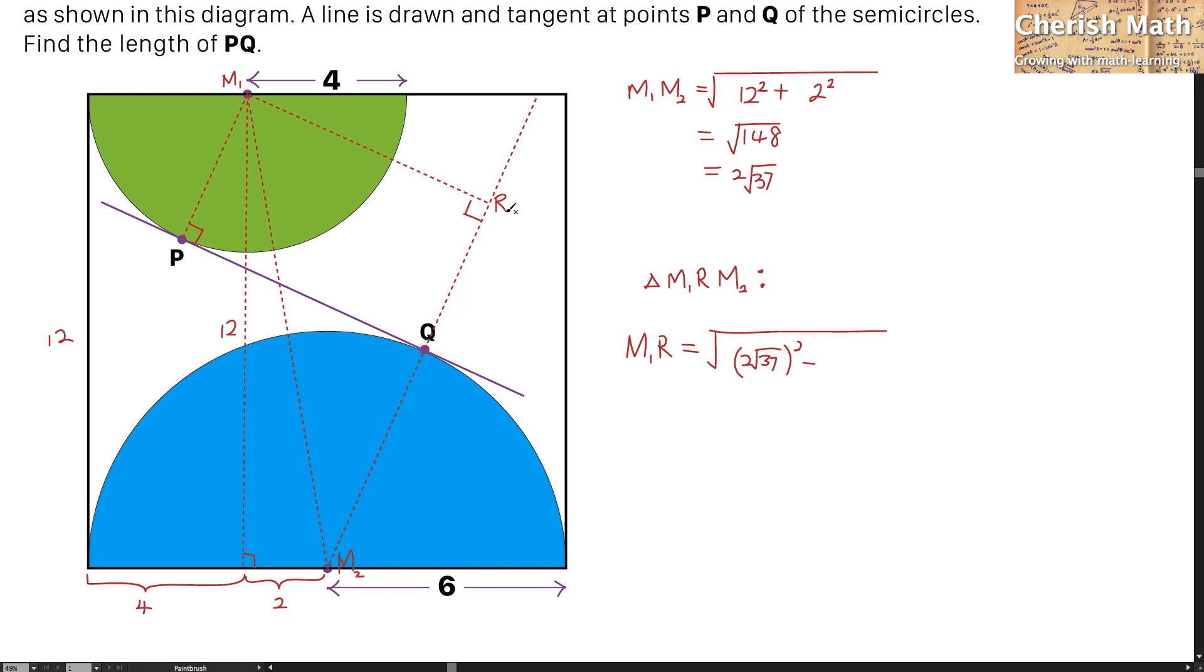Now for the value of M2R, I'm going to use 6 as the radius of the blue semicircle plus the radius of the green semicircle which is 4. So the total of it, that would be 10 and square it. So now, the value of M1R that I am getting here is the square root of 48. To make it simpler, M1R is 4√3.